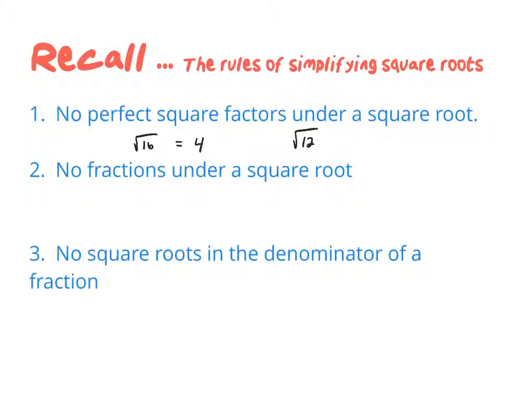The square root of 12 isn't simplified, because it has a perfect square factor that we could have pulled out or broken down — or simplified to get 2 root 3.